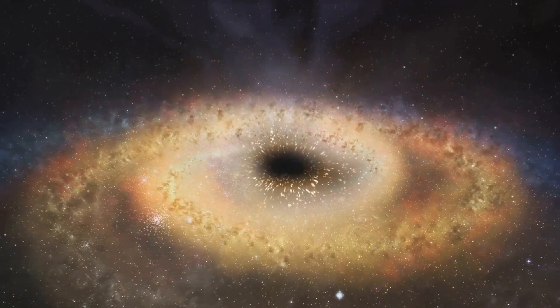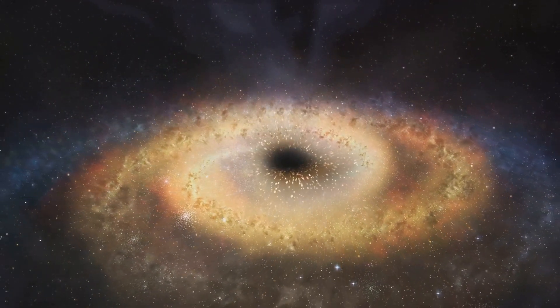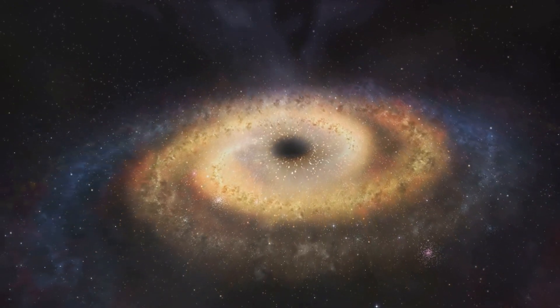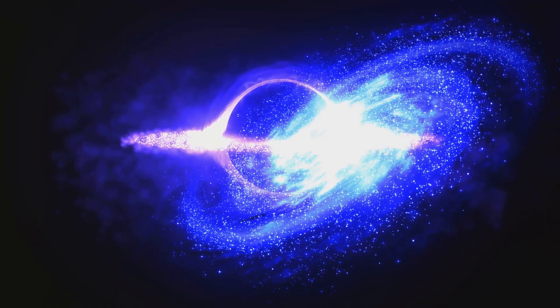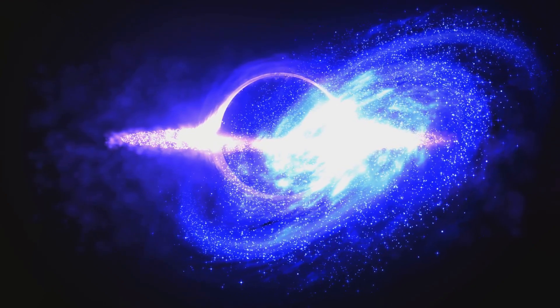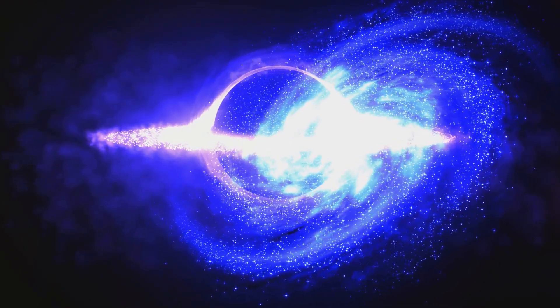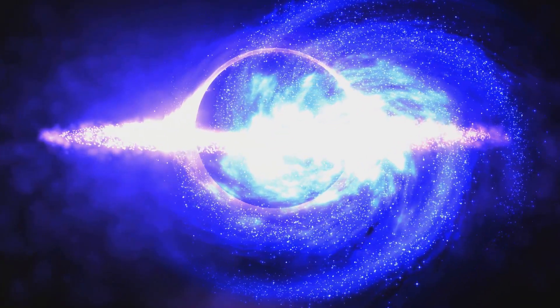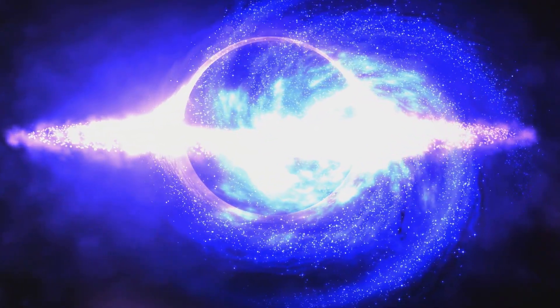The interaction between Sagittarius A asterisk and its surrounding environment also shapes the very fabric of the galactic center. The black hole's gravitational influence carves out a dense central region of stars, known as the nuclear star cluster. This area is home to some of the oldest stars in our galaxy, providing a glimpse into the Milky Way's ancient past.